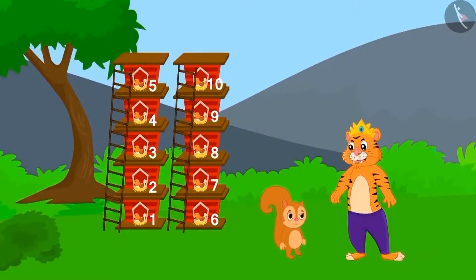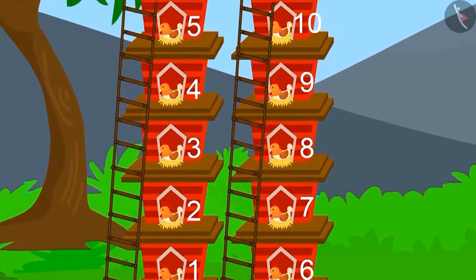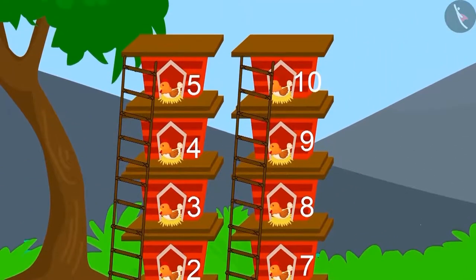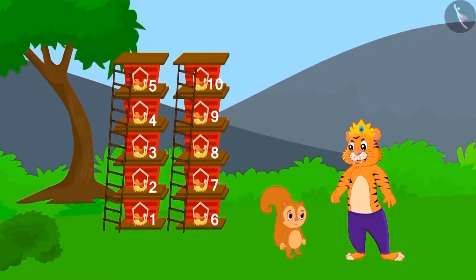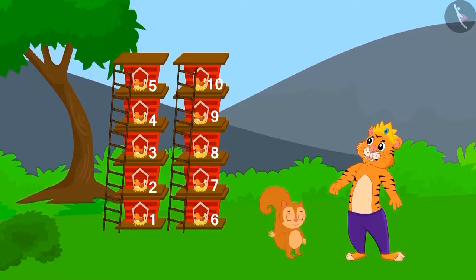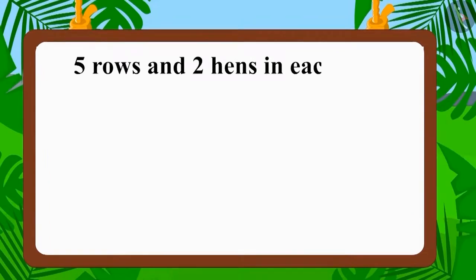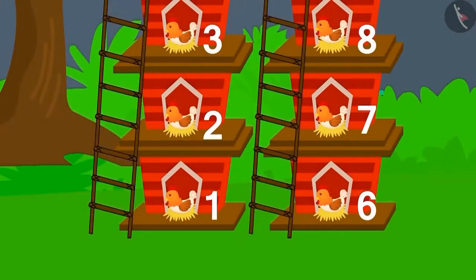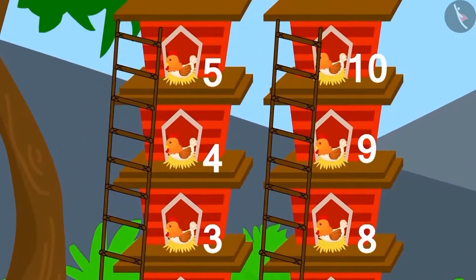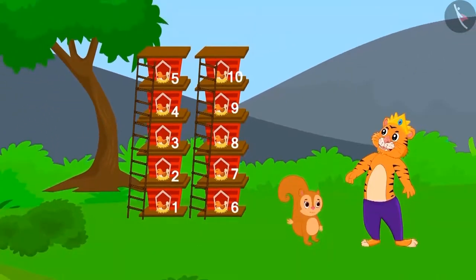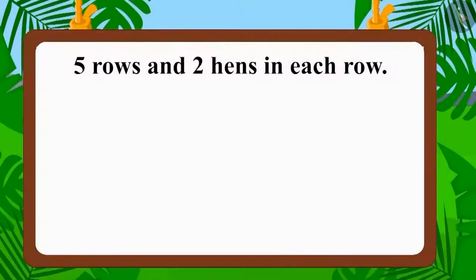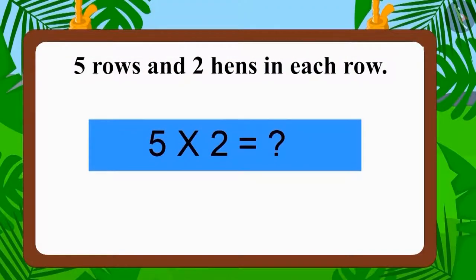Now the king arrived to see the house built by Chanda. Chanda had made use of five rows, with two hens in each row. Was the house built by Chanda correct? Five rows and two hens in each row — is the number of hens in each row equal? Yes! Does the number of hens equal ten? Five multiplied by two makes ten.